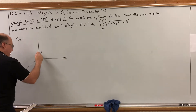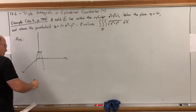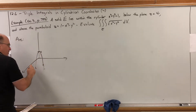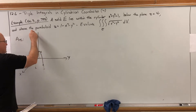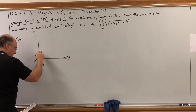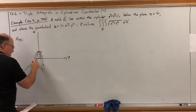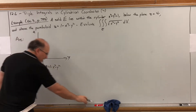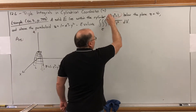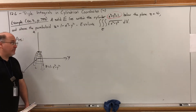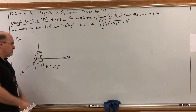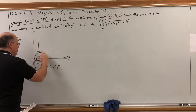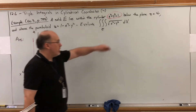Let's sketch this: draw two upside-down parabolas — one in the xz-plane, one in the yz-plane — giving us what looks like an orange juicer. That's z = 1 − x² − y². The cylinder x² + y² = 1 is just the unit circle in the xy-plane with no restriction on z, so it extends as a cylinder around that circle.